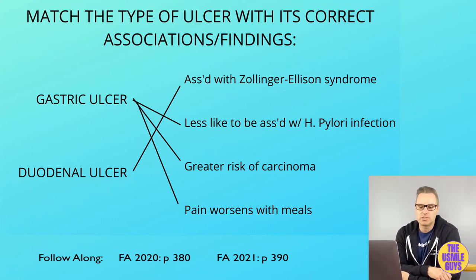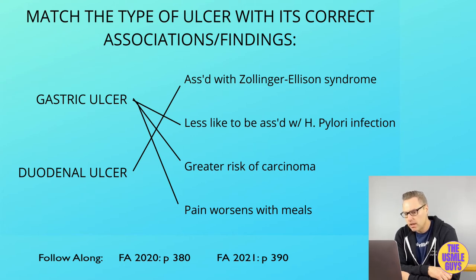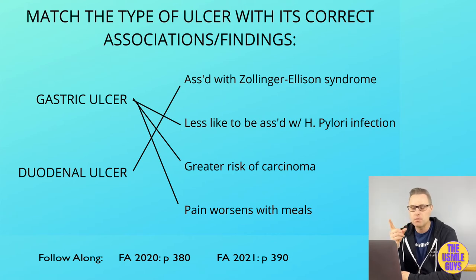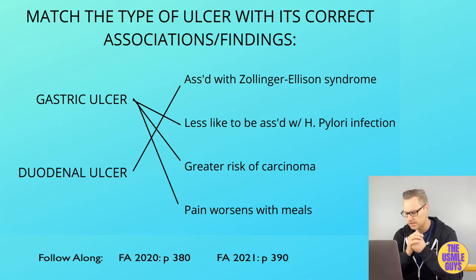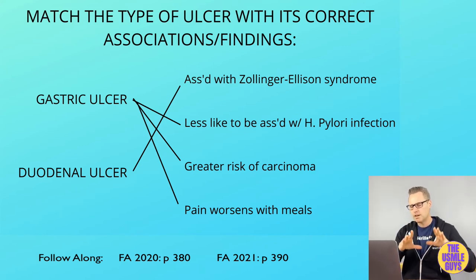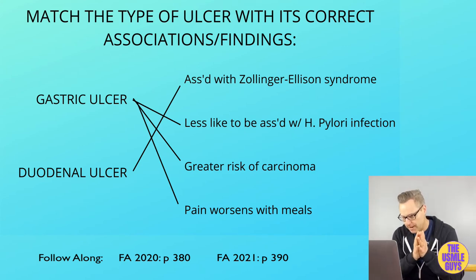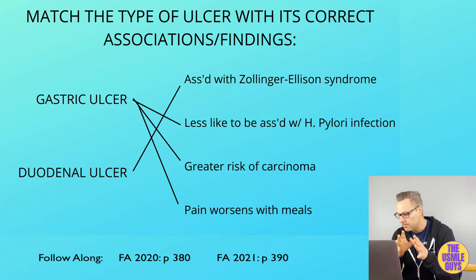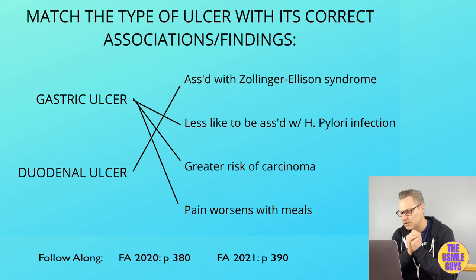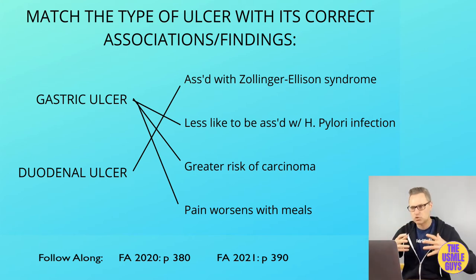H. pylori is strongly linked to both ulcer types, but if you had to pick, it's more so associated with the duodenal ulcer. In both, there's a decrease in mucosal protection against gastric acid. But in a duodenal ulcer, on top of this, we also see an increase in gastric acid secretion, giving the disease a two-pronged effect. NSAIDs are associated with the gastric type, while Zollinger-Ellison syndrome is associated with the duodenal ulcer — and an unrelenting duodenal ulcer not improving with aggressive treatment should make you consider Zollinger-Ellison syndrome.